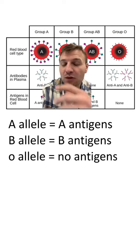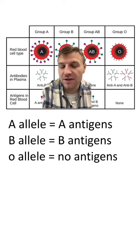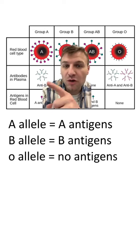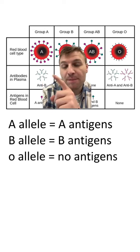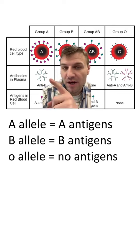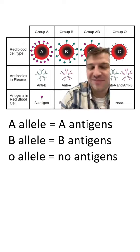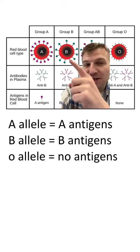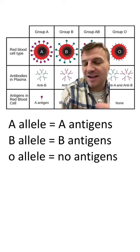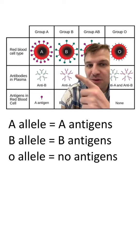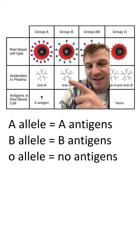If you have A blood, your blood cells are covered in the A antigen. However, you also produce B antibodies, and these B antibodies will react with B blood. If you have B blood, you have a different set of antigens on your cells, but you also produce A antibodies.